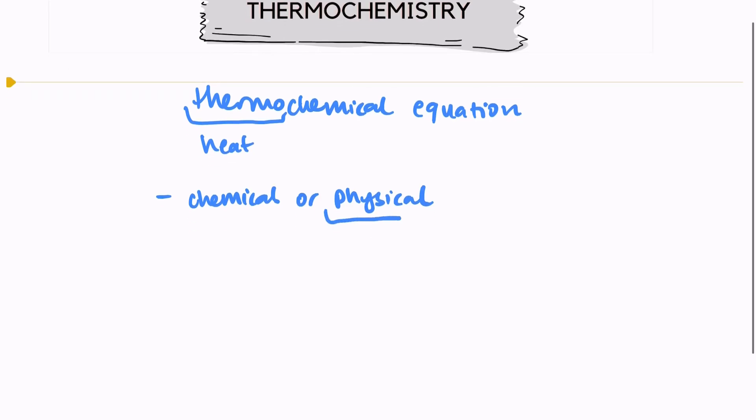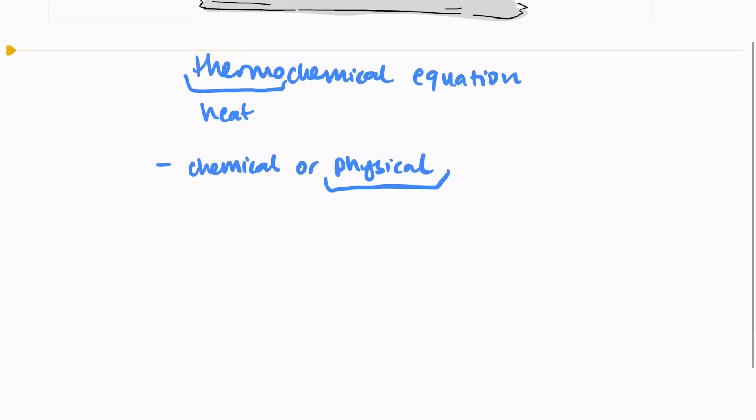An example of a physical change would be something like ice melting, so solid water turning into liquid water. There's a few things that we need to know that we have to have in a thermochemical equation.